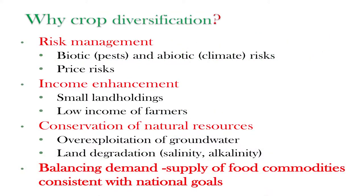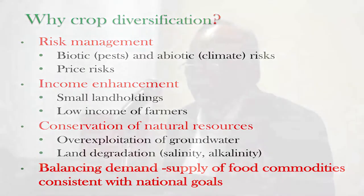The second important objective, which is becoming the overriding objective in today's context, is improvement in farmer income. We all know the government's intention of doubling farmers' income. At the same time, land holding sizes have been declining; holdings of less than one hectare are about 67% of total land holdings in the country, with an average size of just under 0.4 hectare.